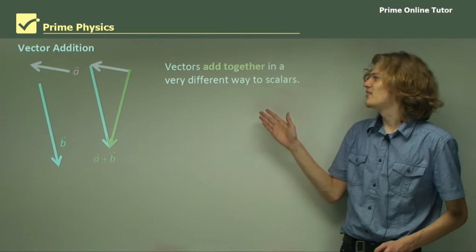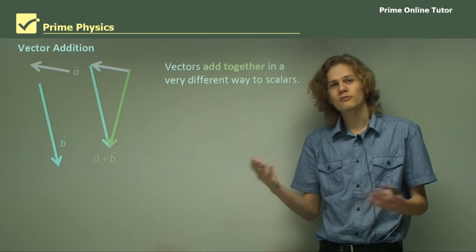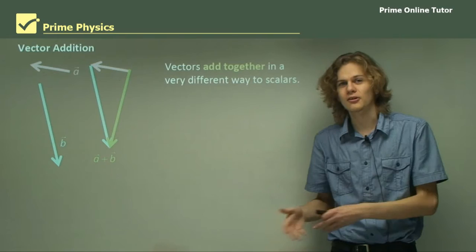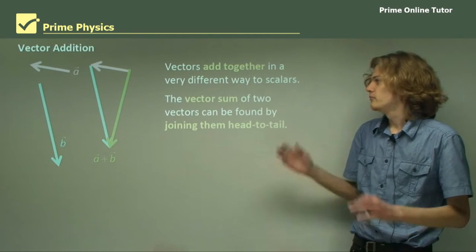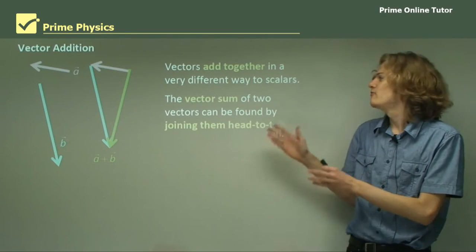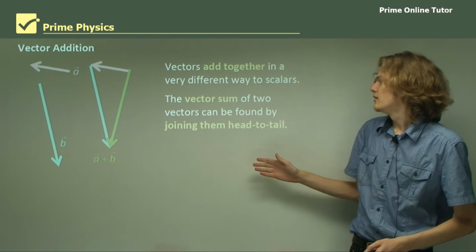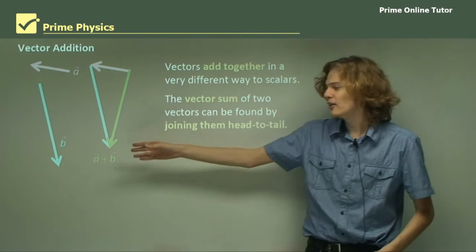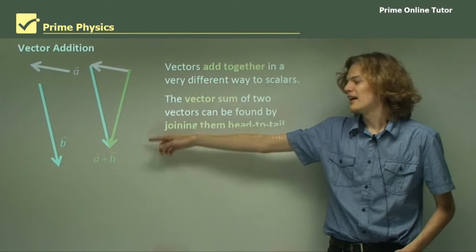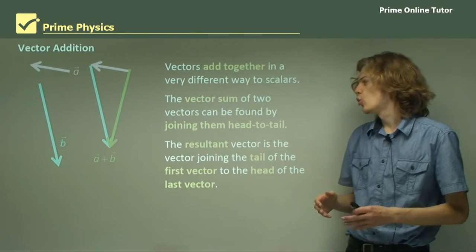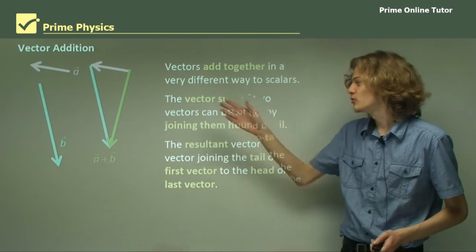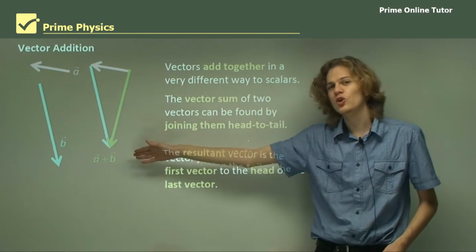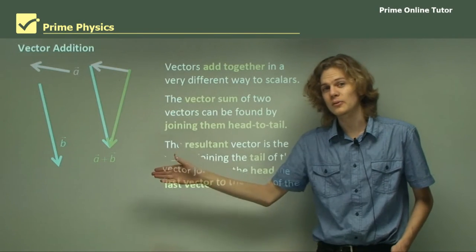Now vectors add together in a very different way to scalars. We already know how to add scalars — 2 plus 3 is 5, 1 kilogram plus 5 kilograms is 6 kilograms. But in the case of vectors, we have vector sums instead of regular sums. To find the vector sum of a pair of vectors, we join them head to tail. By joining the tail of B to the head of A, we get A plus B. A plus B is called the resultant vector — it's the vector joining the tail of the first vector to the head of the last vector, that is, the tail of A to the head of B.